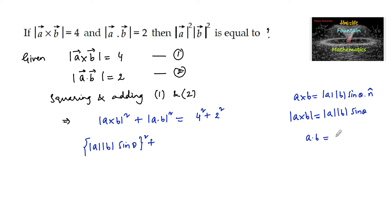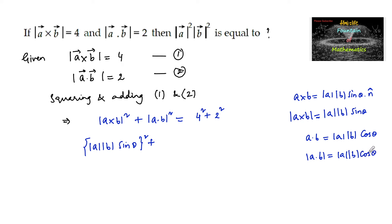We know that a dot b is equal to mod a mod b cos theta, so mod of a dot b is equal to mod a mod b cos theta. We can write mod a mod b cos theta whole squared, giving us 4 squared plus 2 squared, which equals 16 plus 4, that is 20.